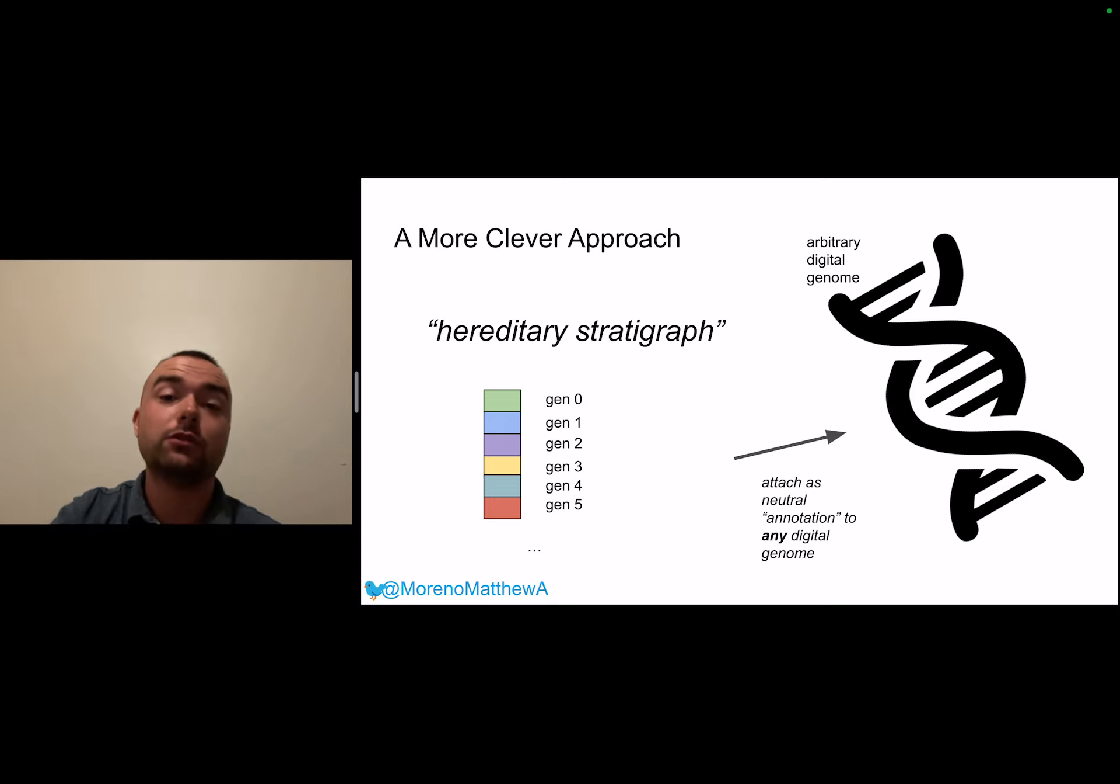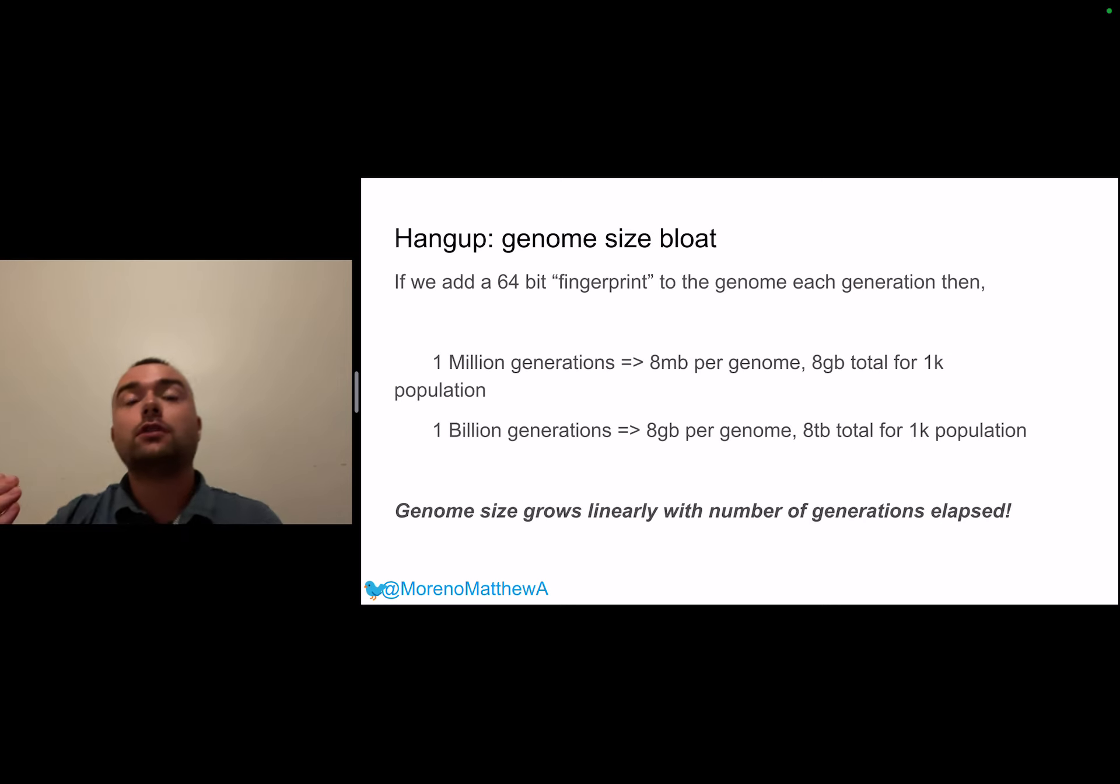The big idea here is that this genome and inheritance system can actually be appended to any other digital evolution system that you're trying to study. If it's bit strings in an NK landscape you can append a hereditary stratigraph, if it's full-fledged maybe Avida style computer programs that are being evolved to solve some kind of logic task you can have everything going on that you normally have and just append this neutral annotation.